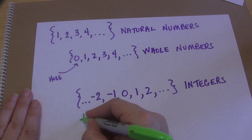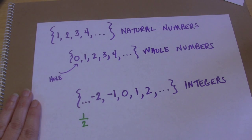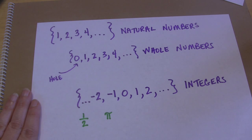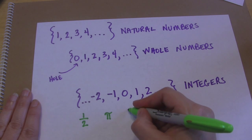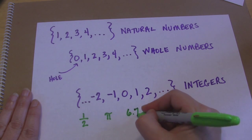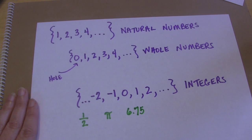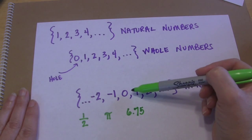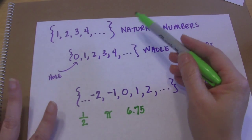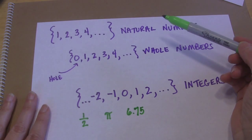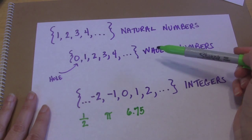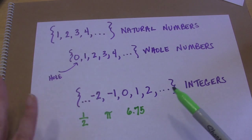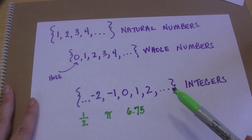Now these three sets do not explain every single number. For instance, you know that there is such a number as one half. Perhaps you even know that there is such a number as pi, or perhaps you know that there is a number called 6.75. None of these numbers fit into any of these sets. These are just your nice, normal, basic numbers: your natural numbers, your whole numbers which include zero, and your integers which have negative whole numbers, if you will.